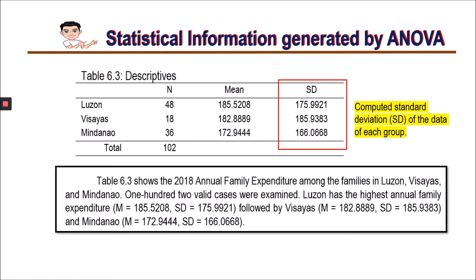Here is an example interpretation of the descriptives table, labeled Table 6.3. Table 6.3 shows the 2018 annual family expenditure among the families in Luzon, Visayas, and Mindanao. 102 valid cases were examined. Luzon has the highest annual family expenditure, followed by Visayas and Mindanao. Every comparison must be justified by including the statistical information from the table — in this case, by stating and comparing the means.